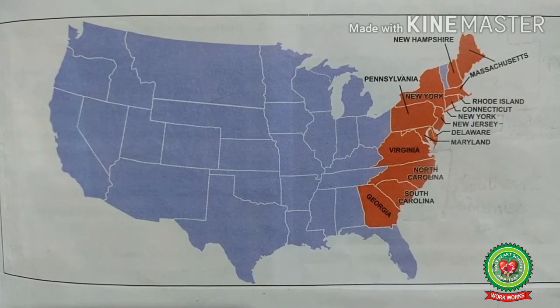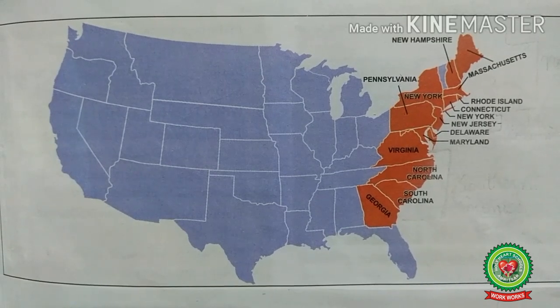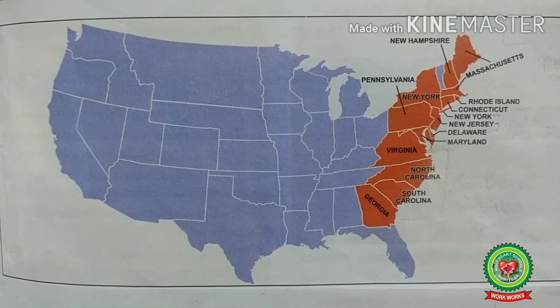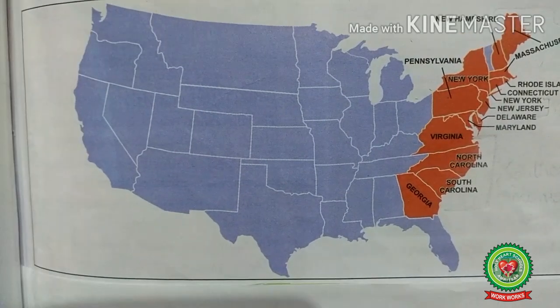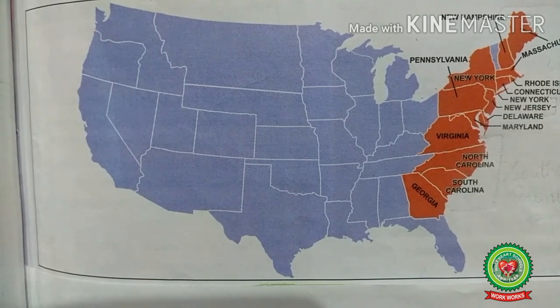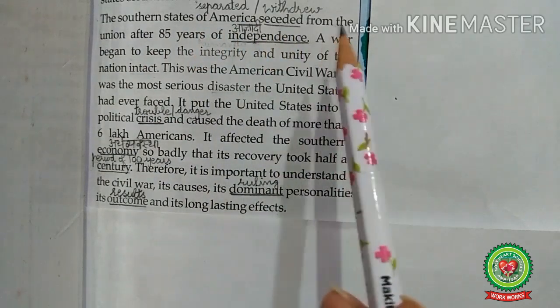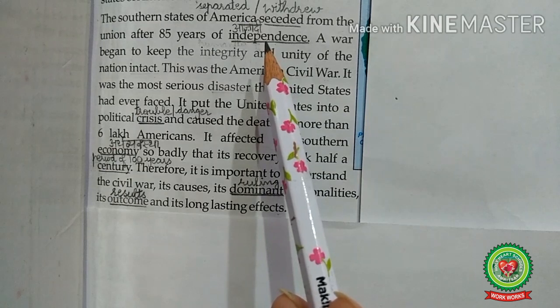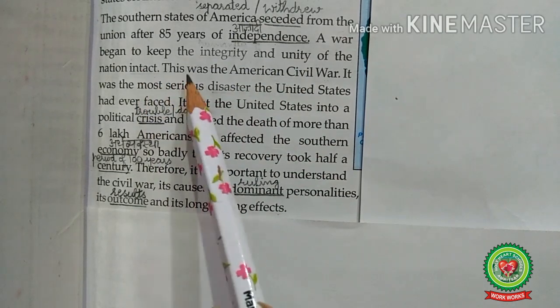Once democracy was established in the USA, people looked forward to economic progress and expansion of settlement areas. The beginning of the 19th century saw westward expansion and industrial development on a large scale. The very progress of economic growth and physical expansion provoked conflicts that could be resolved only by civil war. The Southern states of America seceded from the union after 85 years of independence. A war began to keep the integrity and unity of the nation intact.